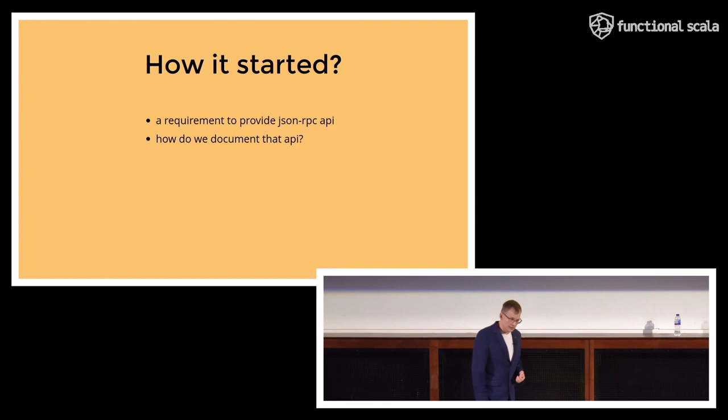Luckily, there is already a project for it. It's called OpenRPC, and it's something similar to what OpenAPI is for HTTP, but it's tailored to JSON-RPC protocol. However, similarly to OpenAPI and Swagger, the specification for OpenRPC documentation needs to be provided as JSON or YAML. So next, we have this question. How do we make sure that the documentation of our API is up-to-date with what we have in our code? And who is going to write all that YAML in the first place, right?